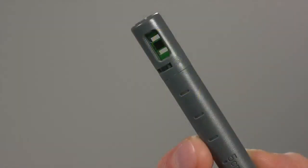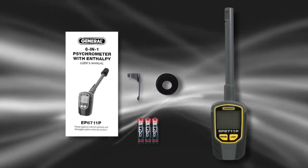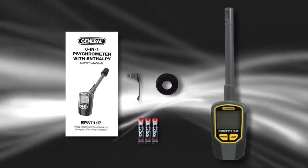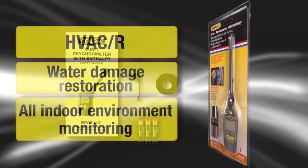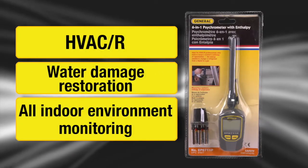The humidity and temperature sensors are intelligently located at the end of the probe. General Tools 6-in-1 psychrometer with enthalpy model EP8711P includes three AAA batteries, pocket clip, rubber bushing and instructions for HVACR, water damage restoration and all indoor environment monitoring.